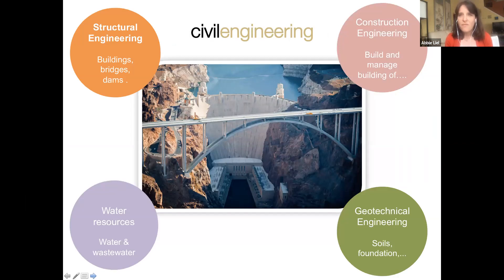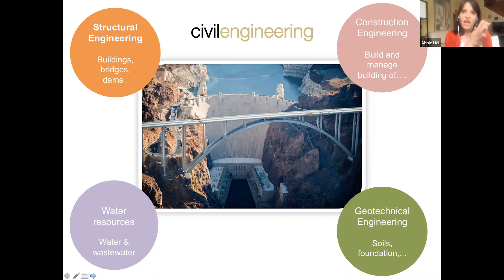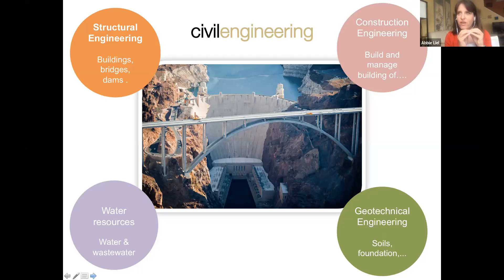Civil engineering is also made up of sub-disciplines. Structural engineering and construction engineering are sub-disciplines shared with architectural engineering, but civil engineering also includes water resources engineering and geotechnical engineering. These fields are responsible for designing, constructing, and also maintaining the built environment. The main difference is that architectural engineering focuses on buildings, while civil engineering focuses on everything — dams and bridges in addition to buildings. That said, if you end up in one and decide you want to explore the other, there are many opportunities to change your mind or take courses in both disciplines.